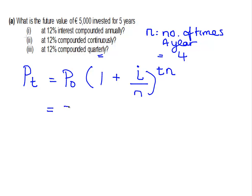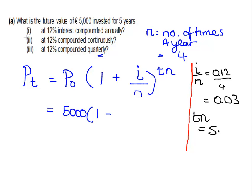So let's do that. P0 is 5000. 1 plus i... Let's actually just work this out over on the side here. i divided by n is 0.12 divided by 4. And that is equal to 0.03. Also, t times n is 5 times by 4. That's equal to 20. So what we're doing here is 1 plus 0.03 to the power of 20. 5000 by 1.03 to the power of 20.